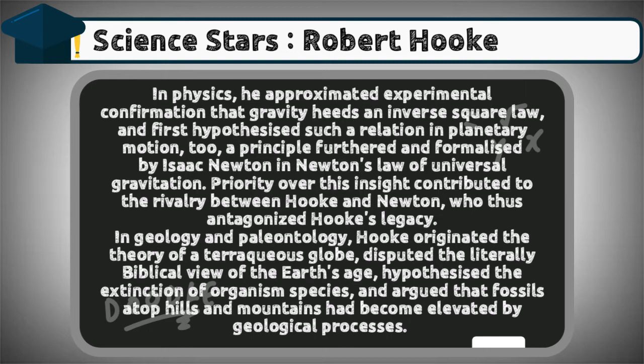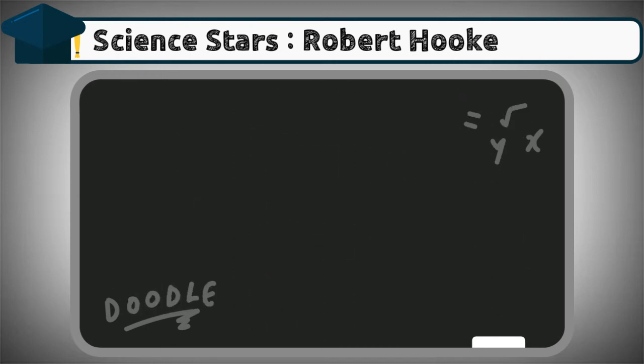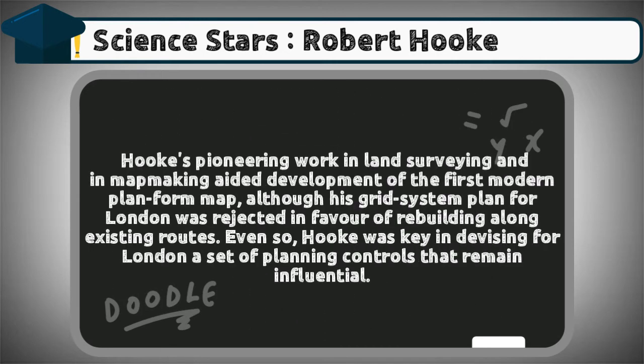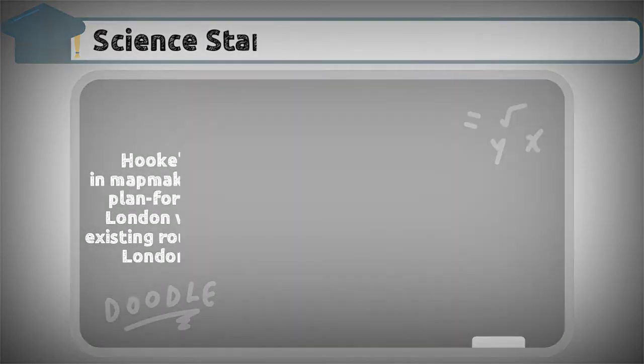Hooke argued that fossils atop hills and mountains had become elevated by geological processes. His pioneering work in land surveying and map making aided the development of the first modern plan-form map. Although his grid system plan for London was rejected in favor of rebuilding along existing routes, Hooke was key in devising for London a set of planning controls that remain influential.